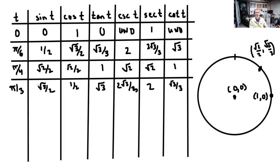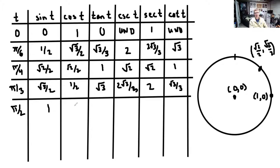The book goes one step further and includes π/2. At π/2 we're at the top of the circle at height 1, so sine is 1 and cosine is 0. Tangent is 1 over 0, which is undefined. Cosecant is the reciprocal of 1, which is 1. Secant is the reciprocal of 0, which is undefined. Cotangent is x over y = 0 over 1 = 0.